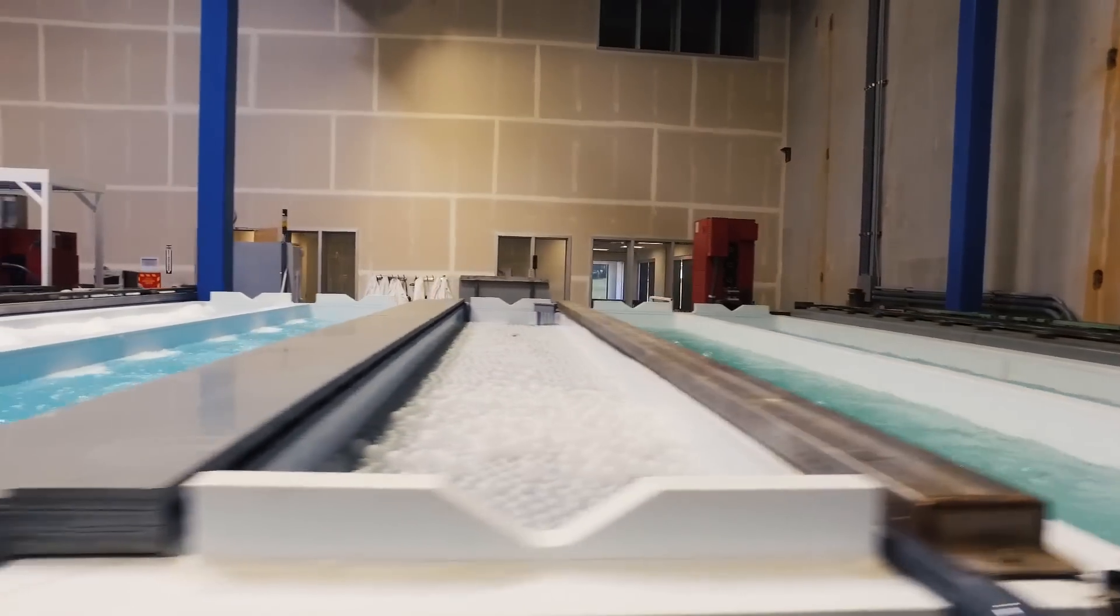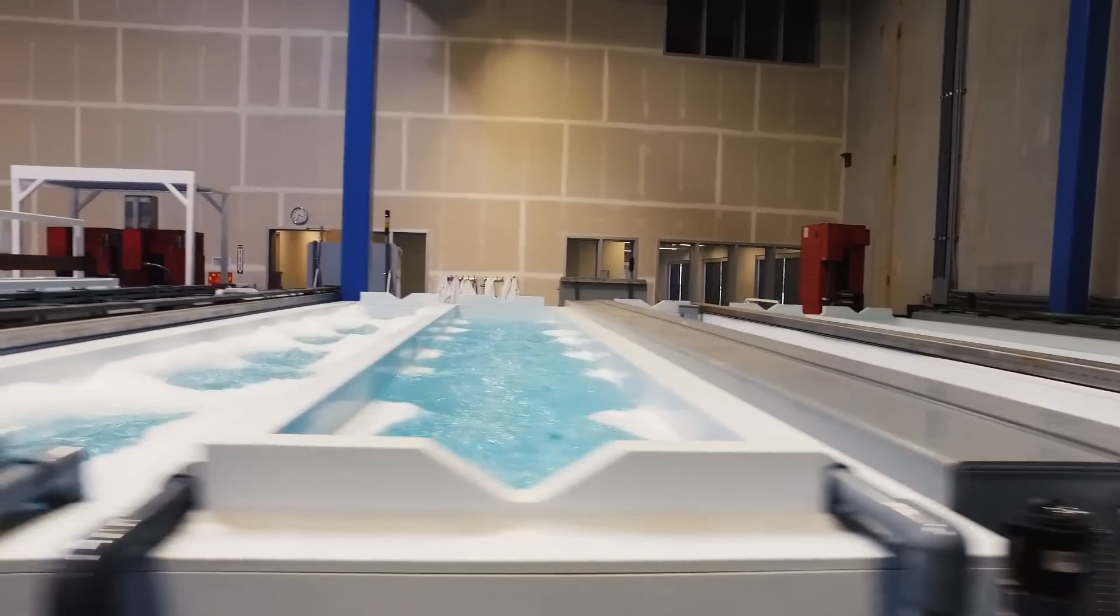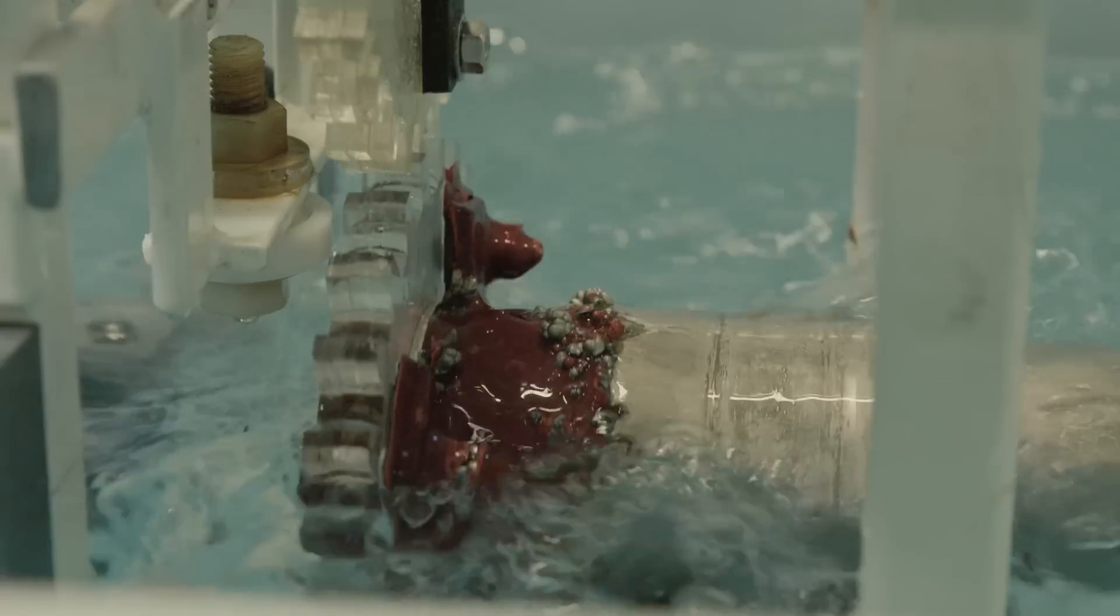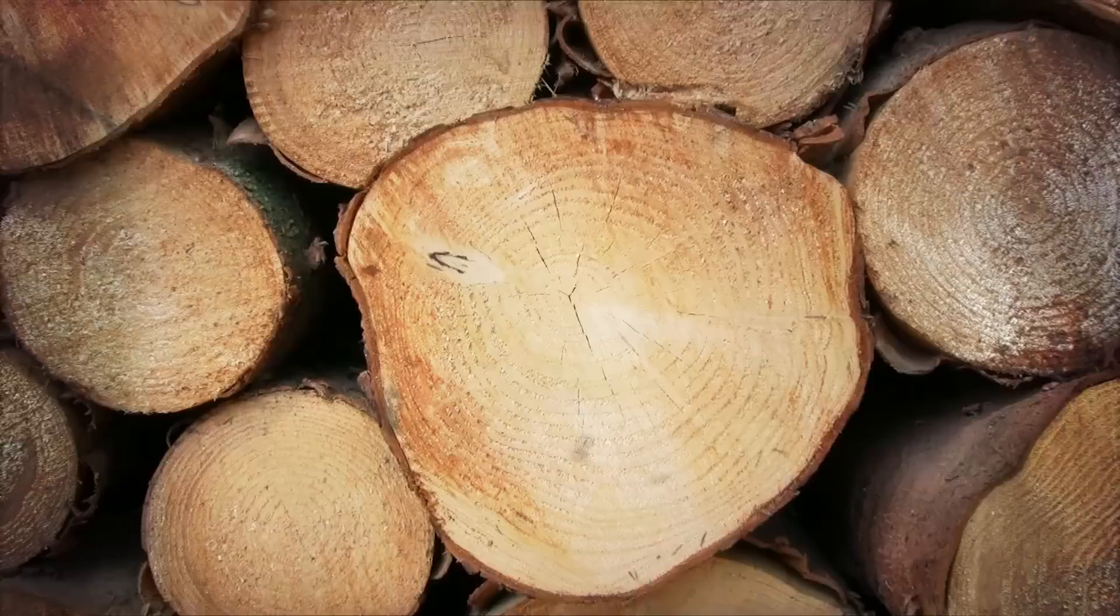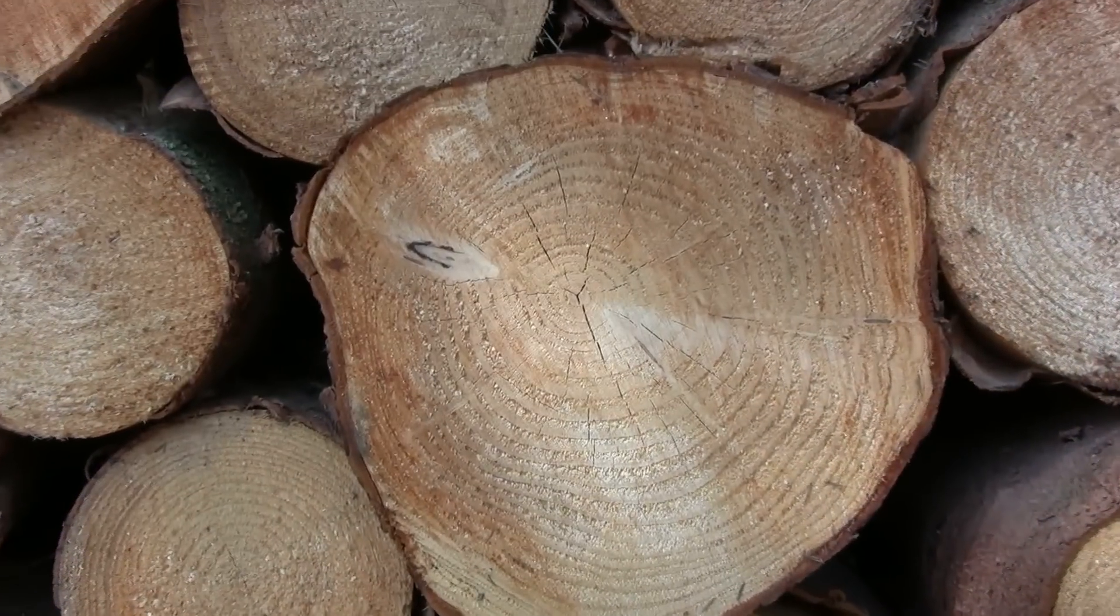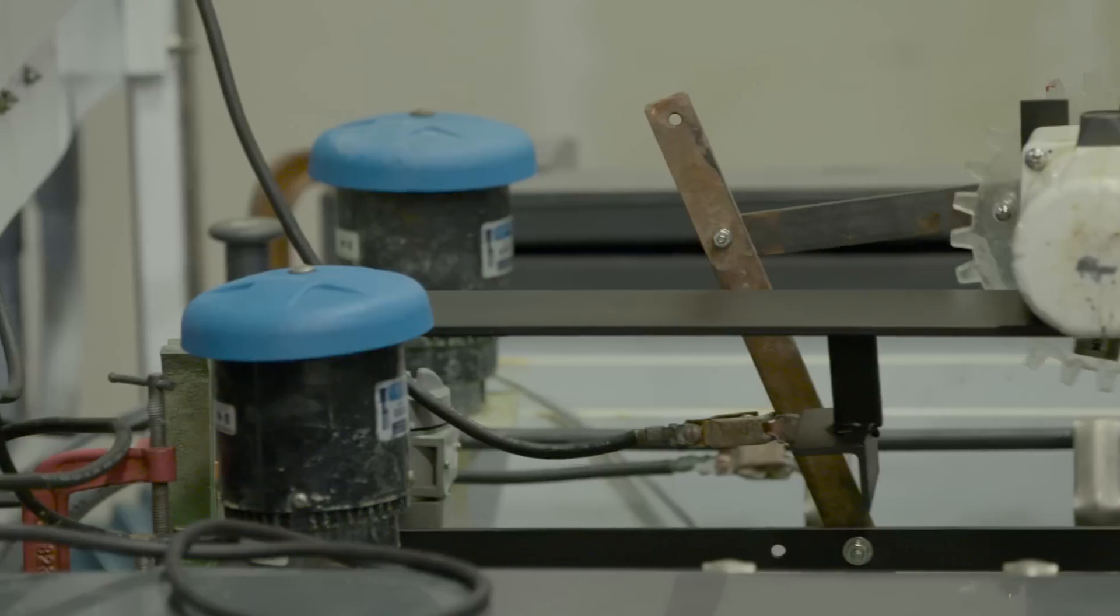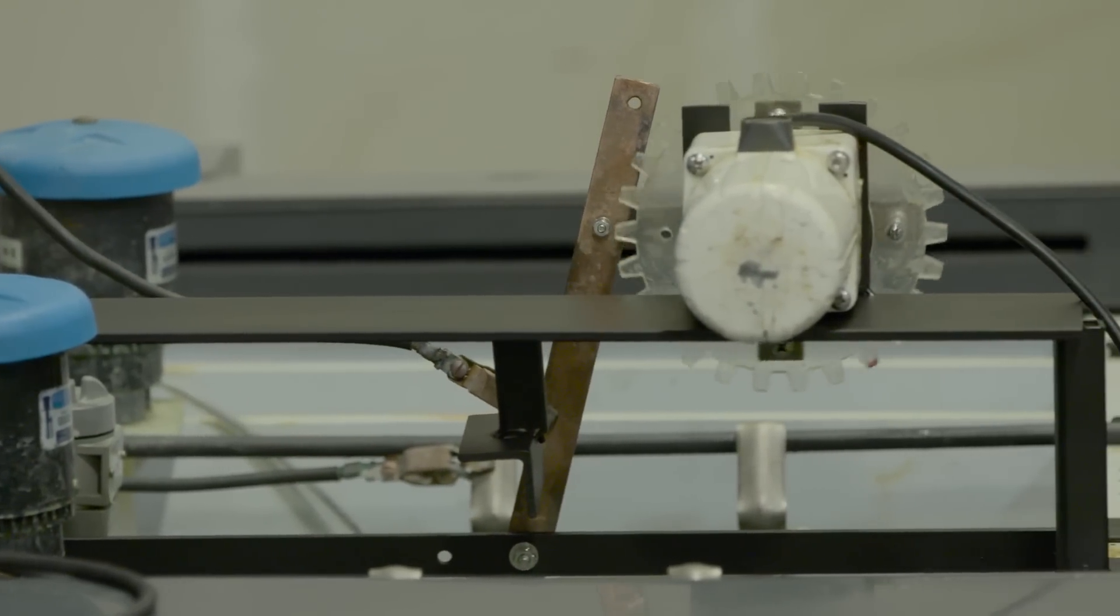Essentially what we're doing here is we're growing metal in plastic tanks. It's a very similar process, in fact, to the way Mother Nature grows rings on trees. When you cross-section a tree, you see rings. In our case, we're modulating an electric field to produce the same kind of layered structure except it's a metal layer.